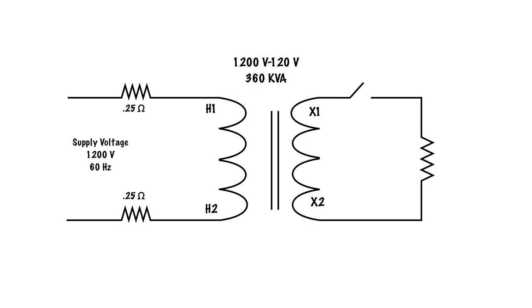Right now we have a transformer that is 1200 to 120 volts, which means it has a turns ratio of 10 to 1, and on this side we have a supply voltage of 1200 volts. There's a difference between our supply voltage and what we call our terminal voltage primary and our terminal voltage secondary.